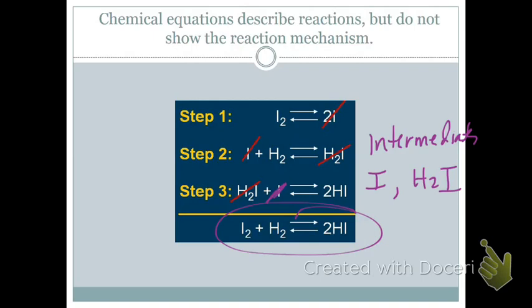Because we have no experimental data, there is no way from here that we could determine what the rate determining step is. We either have to have data to tell us that, or like you'll see on the worksheet today, it tells you slow step or fast step. For this example, it's just taking you through the mechanism process.